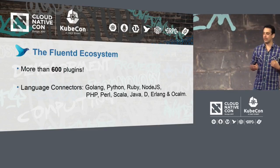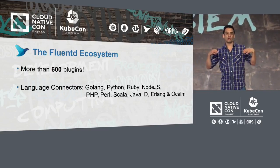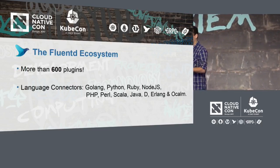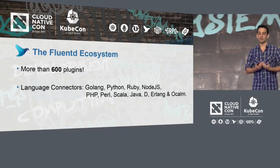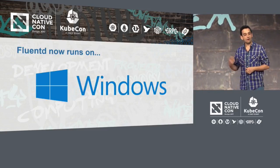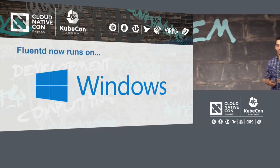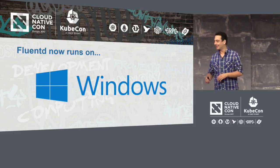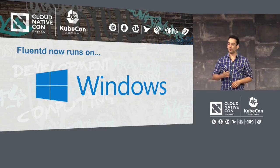When we started FluentD, we wanted to make it work with all applications. So if you write your own applications in Go or Python, you have your own connectors for FluentD and you can send your application logs to FluentD. And now, FluentD also runs on Windows — that's unexpected for most people here, and I see a lot of smiles.